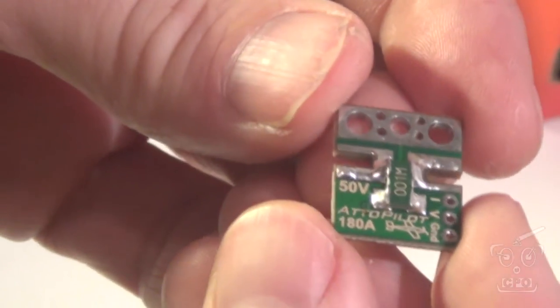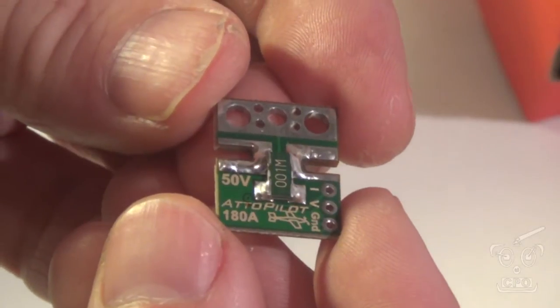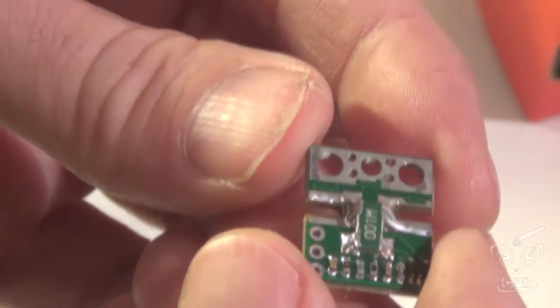and in this video I'm going to install the Autopilot 180 Amp Current and Voltage Sense Breakout from SparkFun. So I got this because the stock power module for my PixHawk was rated only at 90 Amps max,